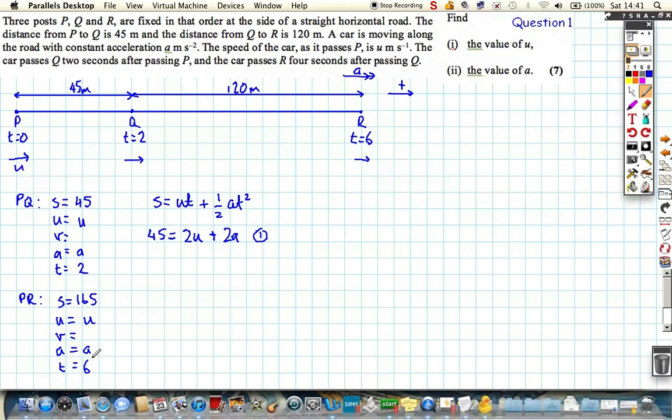So again, if we use s equals ut plus half at squared, and this is a bit mean for the first question I think, but nevertheless we'll all persevere. We find out that 165 is equal to 6u plus 18a. Let's call this equation number two.